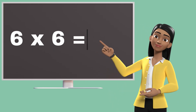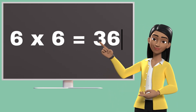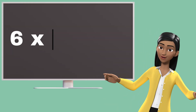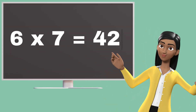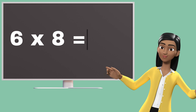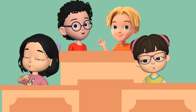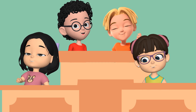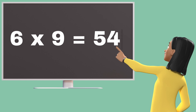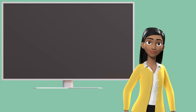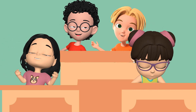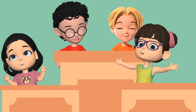Six sixes are thirty-six. Six sevens are forty-two. Six eights are forty-eight. Six nines are fifty-four. Six tens are sixty.